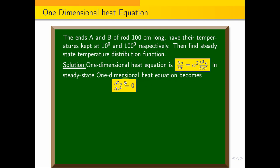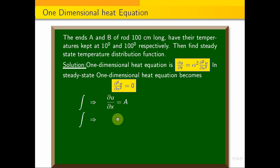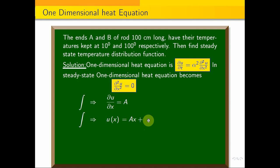From the one-dimensional heat equation in steady state, integrating ∂²u/∂x² = 0 once gives ∂u/∂x equal to a constant. Integrating again with respect to x gives u(x) = ax + b.